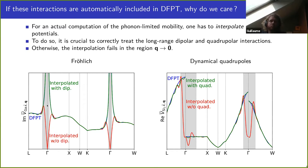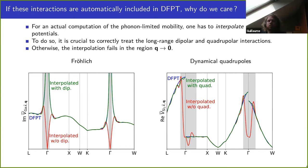Including the dipoles, we do recover the DFPT results and reproduce the divergence correctly. The same is true for dynamical quadrupoles, which lead to discontinuities rather than divergences at gamma. Without including the dynamical quadrupoles in the interpolation, the interpolation tries to account for this discontinuity and produces unphysical oscillations around gamma, leading to wrong results. The correct behavior is restored once we include the dynamical quadrupoles in the procedure.